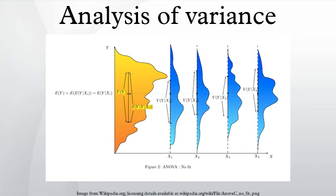Model confirmation: it is prudent to verify that the assumptions of ANOVA have been met. Residuals are examined or analyzed to confirm homoscedasticity and gross normality. Residuals should have the appearance of noise when plotted as a function of anything including time and modeled data values. Trends hint at interactions among factors or among observations. One rule of thumb: if the largest standard deviation is less than twice the smallest standard deviation, we can use methods based on the assumption of equal standard deviations and our results will still be approximately correct.